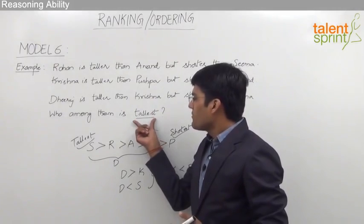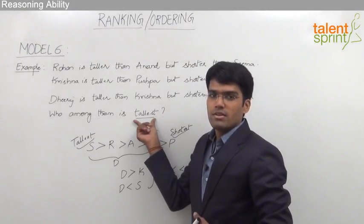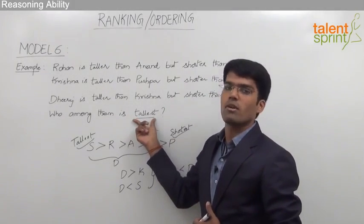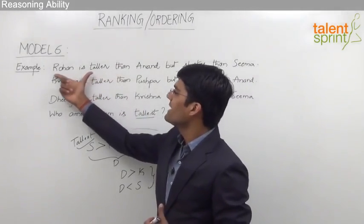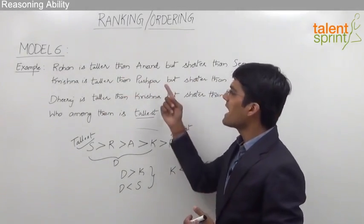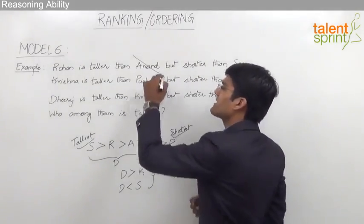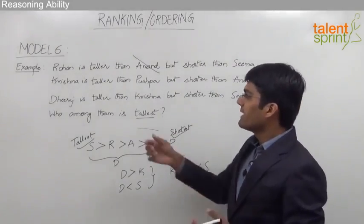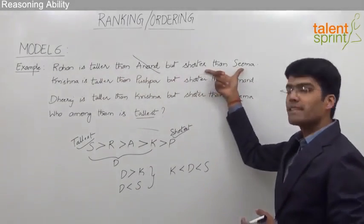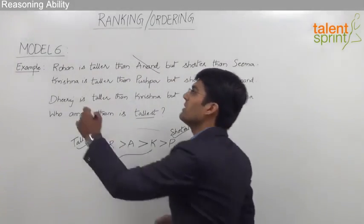We need to find the tallest person, so any person who is shorter than someone else cannot be the answer. From the first statement, Rohan is taller than Anand — so Anand is shorter than Rohan and cannot be tallest. Rohan is shorter than Sima, so Rohan cannot be tallest either. Both Anand and Rohan are eliminated.